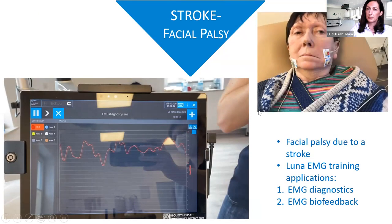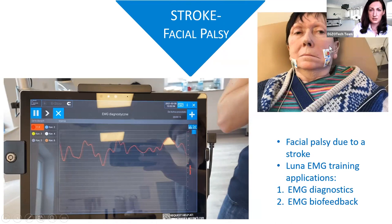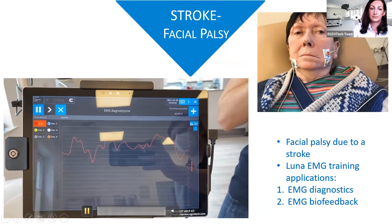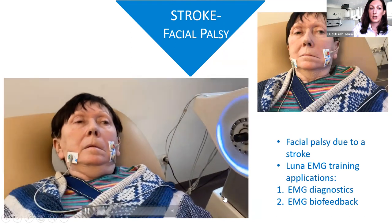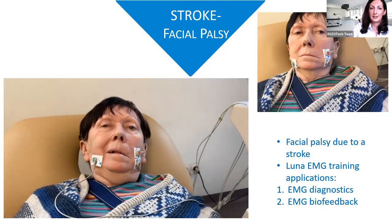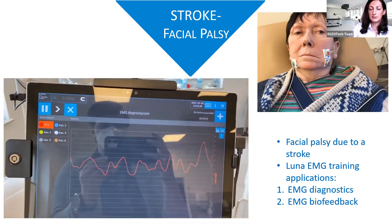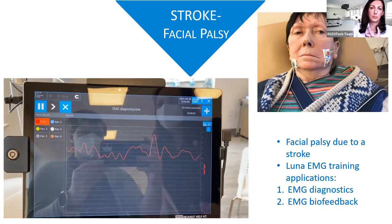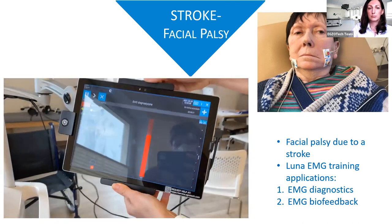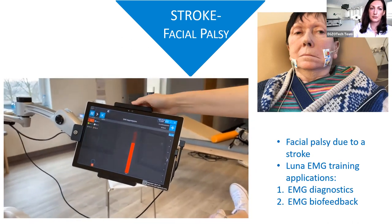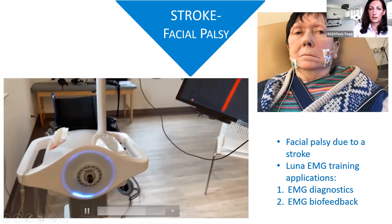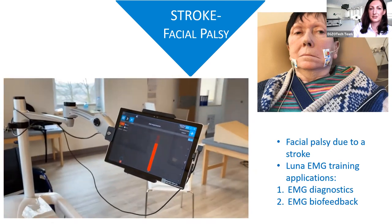Another possibility is working with stroke patients who have facial palsy. We used EMG diagnostics to detect whether there was any muscle activity, and based on that applied several tasks. We asked the patient to smile, and the EMG captured activity on the cheek — detecting whether she was using muscles on both sides. She could observe this on the graph as visual feedback, and she was really positive toward this kind of exercise.